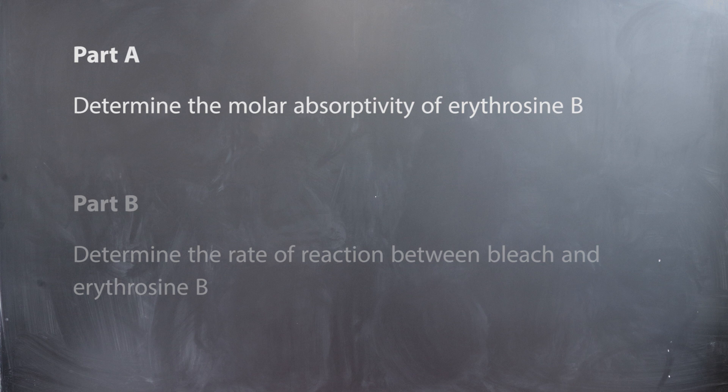The molar absorptivity tells us how much light erythrosine B absorbs per mole per path length. Be aware that the molar absorptivity can change depending on the wavelength of light you shine through it. The second part of the lab is to use the molar absorptivity of erythrosine B to determine the rate of reaction between erythrosine B and bleach.